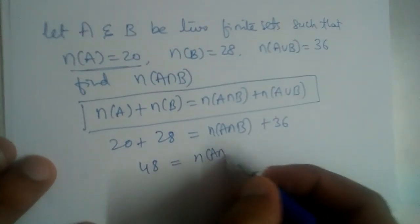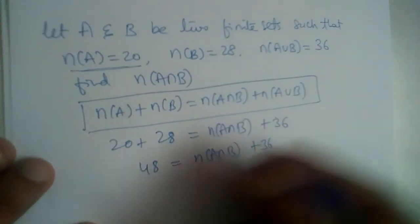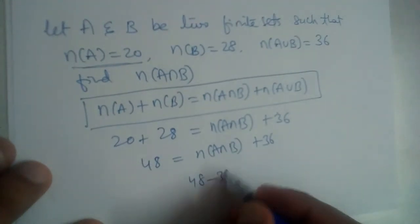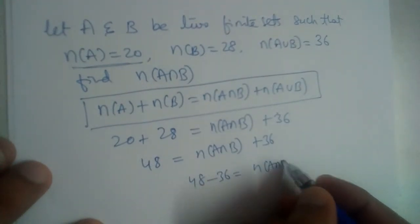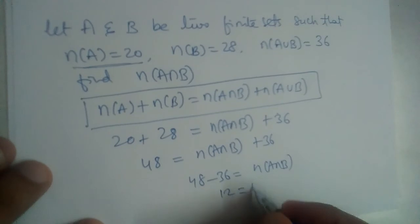is 48 equals n(A intersection B) plus 36. 36 will go on the other side and becomes minus. So n(A intersection B) will be equal to 12.